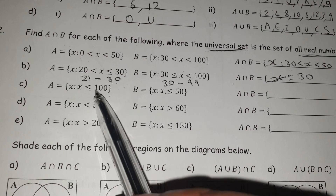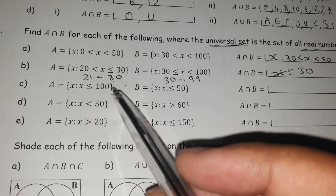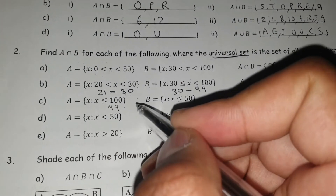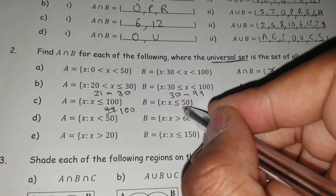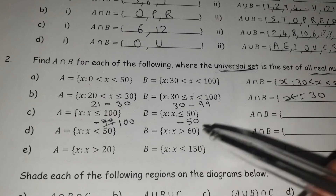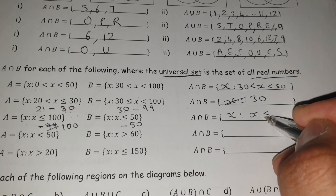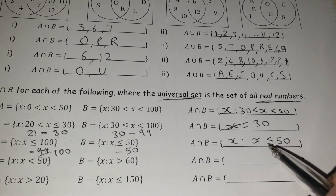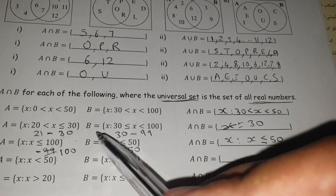For question (c), set A is X ≤ 100, so anything up to and including 100. Set B is X ≤ 50, so anything up to and including 50. Because we don't know whether there are any square roots or irrational numbers in between, we just leave the answer as X ≤ 50 in inequality notation. That means it could even go into negatives, but you're just putting the upper limit on there because it's what fits into both set A and set B.